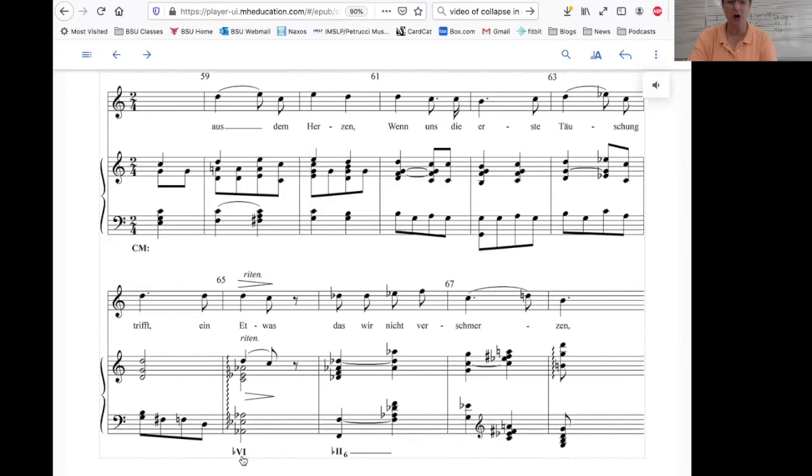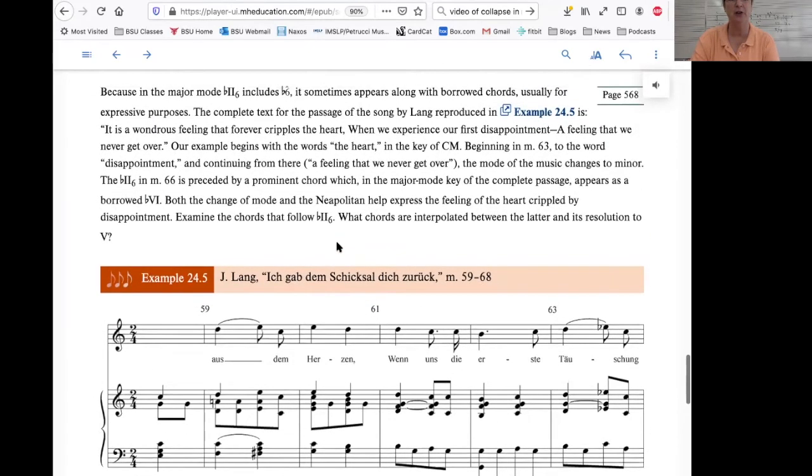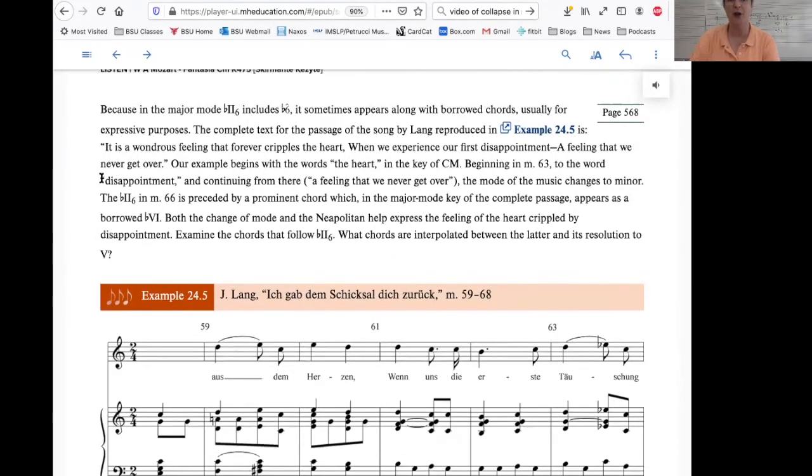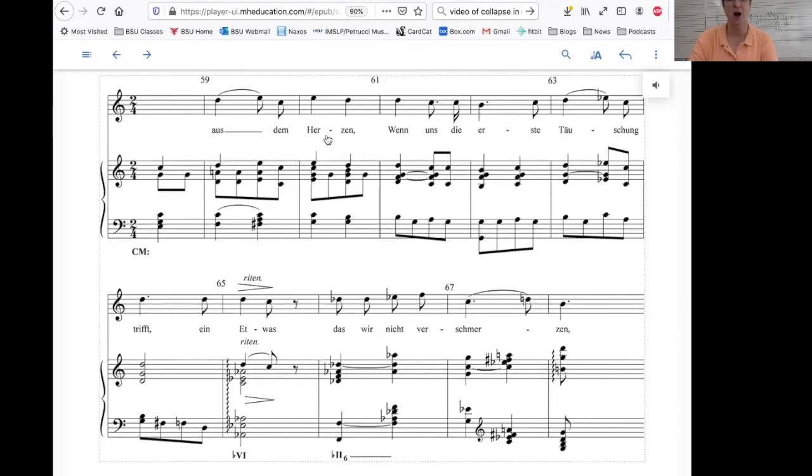So the author here is calling it flat 6, but if you called it a 5 of flat 2, you would be correct. The translation of this text is given in the paragraph above. It is a wondrous feeling that forever cripples the heart when we experience our first disappointment, a feeling that we never get over. Here's the translation: from the heart when we, the first disappointment, experience ein etwas, a something that we never get over, or that we do not lose.